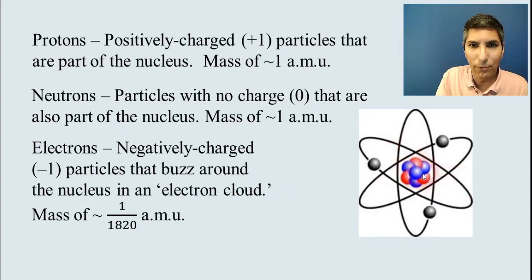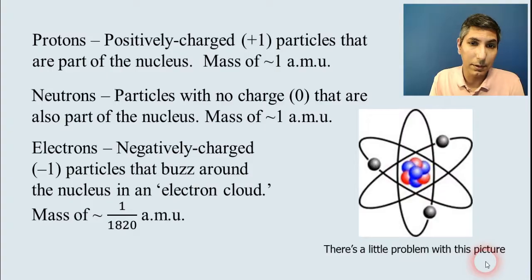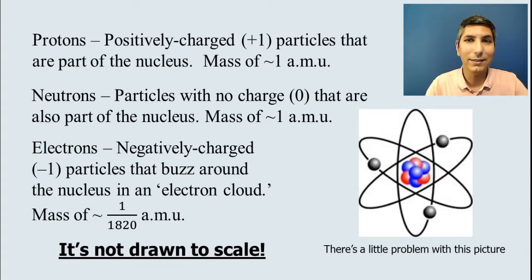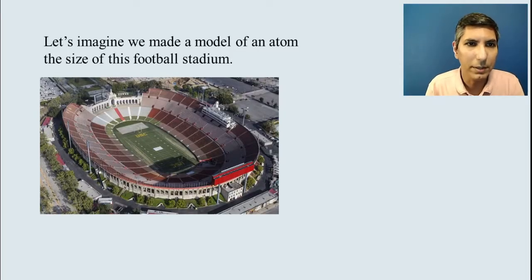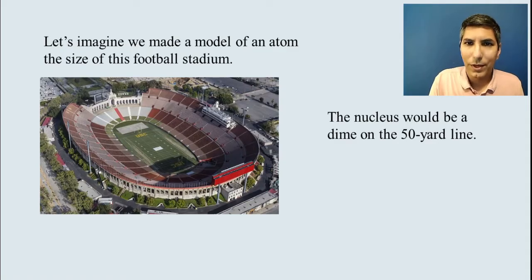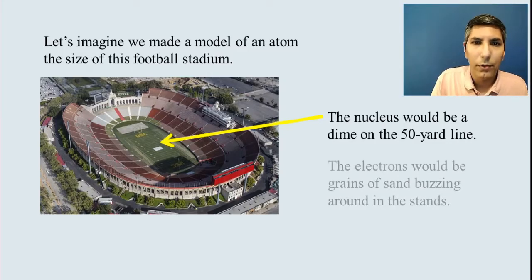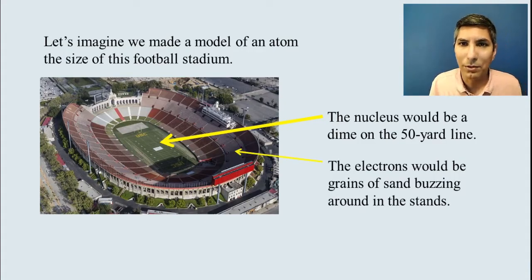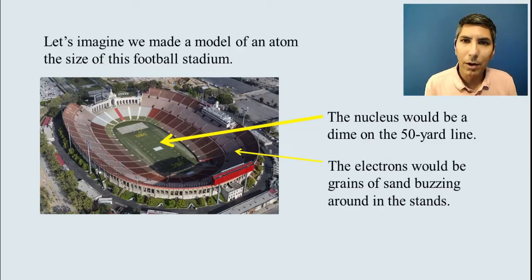They have a negative charge. Now this is a picture that you've probably seen before, where you have neutrons and protons in the middle, electrons buzzing around. There is a major, I say that there's a little problem. It's actually rather a major problem with this picture. And the fact is, the picture is not drawn to scale. In fact, it's not even close to scale. Because if you wanted to draw or visualize an atom that actually was drawn to scale, you might need something that's about the size of this football stadium here. So let's imagine that we're going to make the model of an atom the size of that football stadium right there. Now if that's the case, the nucleus is going to be a dime on the 50-yard line. So imagine a dime on the 50-yard line. Well, the electrons would be grains of sand buzzing around in those outside stands.